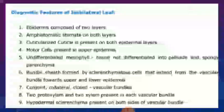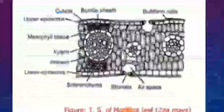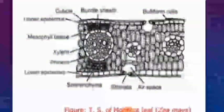Hypodermal sclerenchyma is present on both sides of the vascular bundle — on the upper as well as on the lower side. This sclerenchyma provides mechanical support to the vascular tissue.